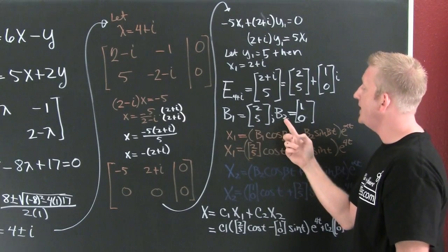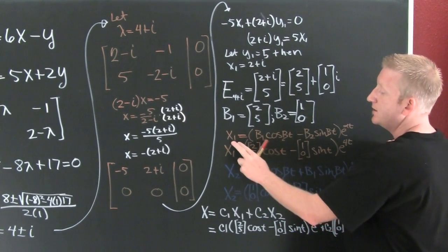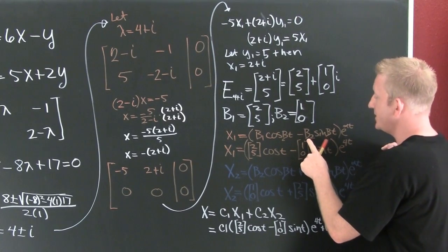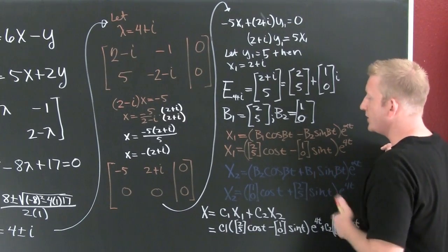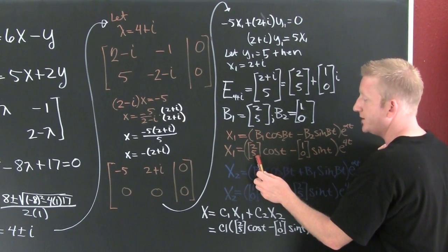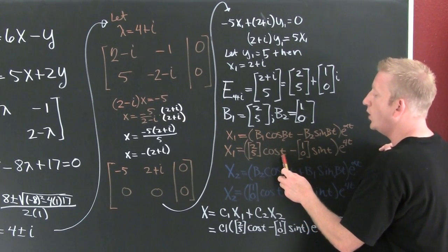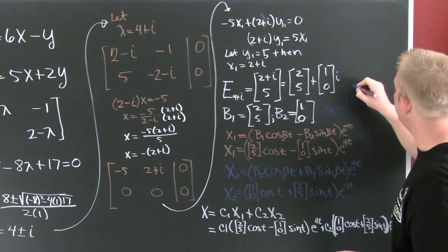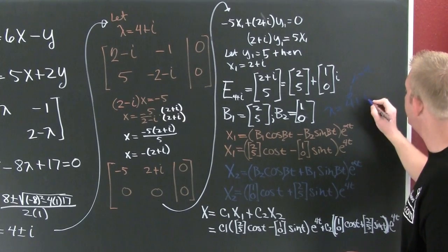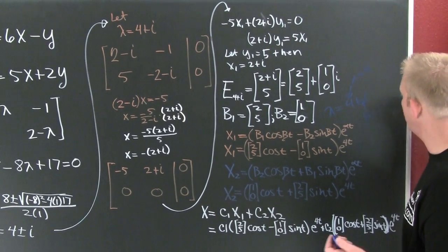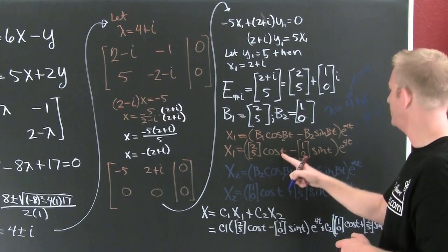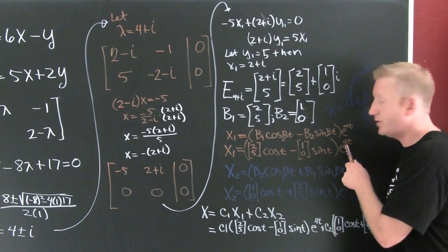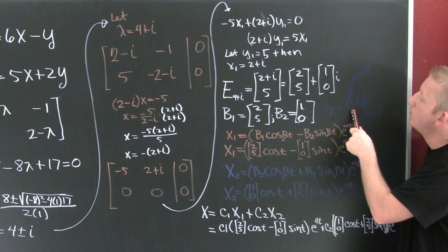I know my forms: the first solution is the real part times cosine of beta t, minus the imaginary part times sine of beta t, times e to the alpha t. Plugging in: b1 is [2, 5] and b2 is [1, 0]. My eigenvalue was 4 plus i, making alpha equal to 4 and beta equal to 1. So I replace beta with 1. The first solution is [2, 5] cosine(t) minus [1, 0] sine(t), all times e to the 4t. The 4 comes from the real part of my eigenvalue.